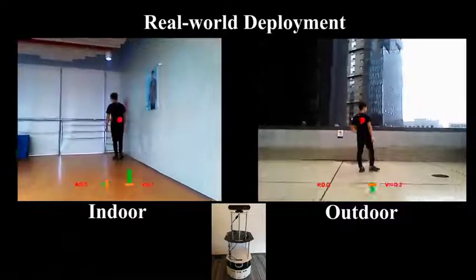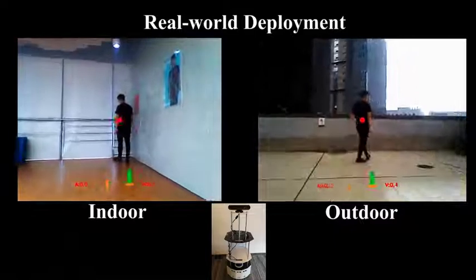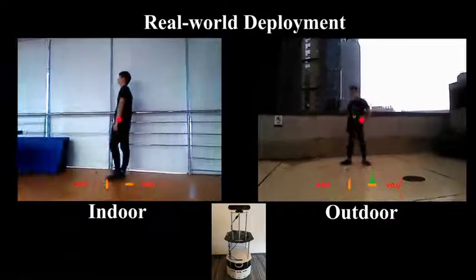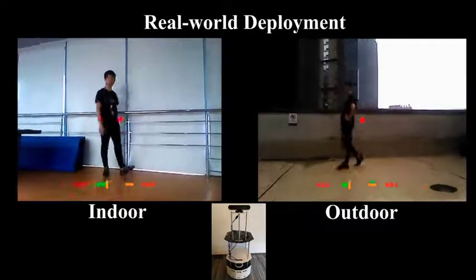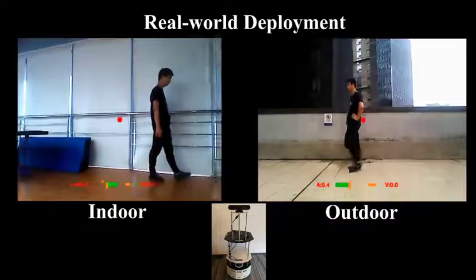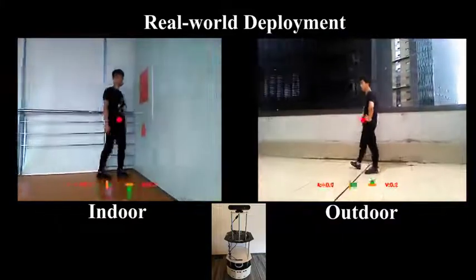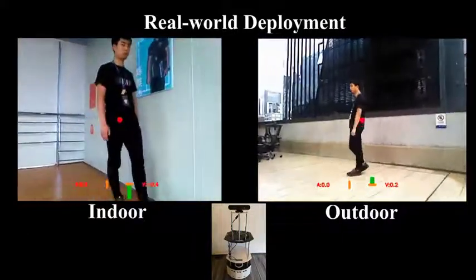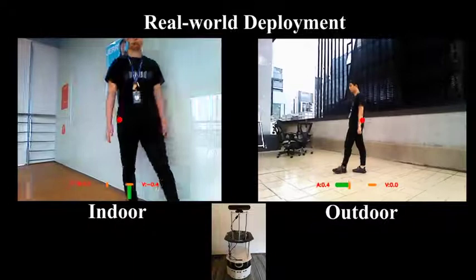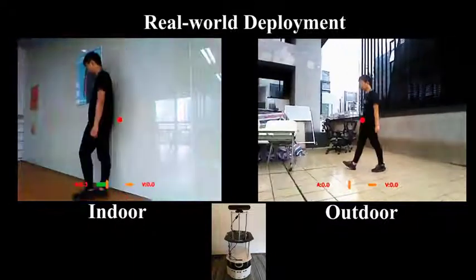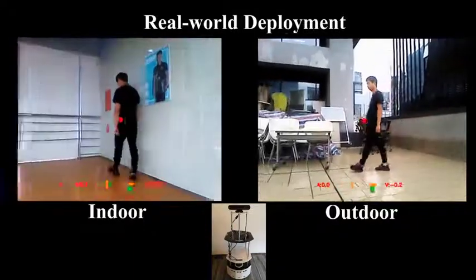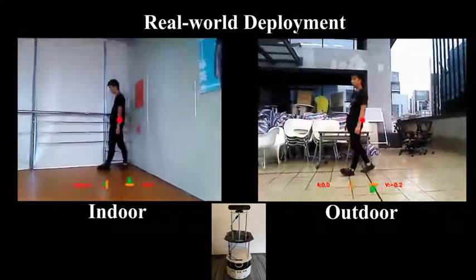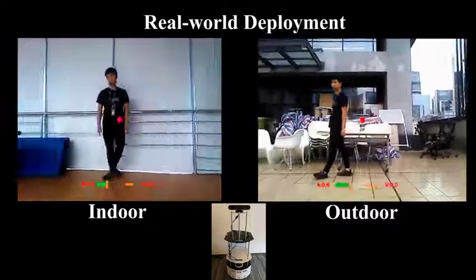This video shows transferring the learned tracking model to a real robot without any adaptation or tuning to the model, and it still follows the target well. This further demonstrates the generalization ability of the method.